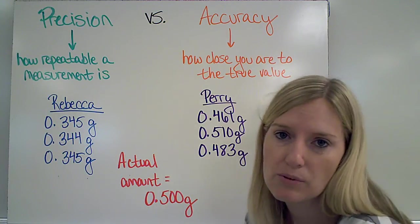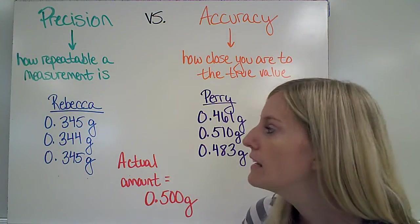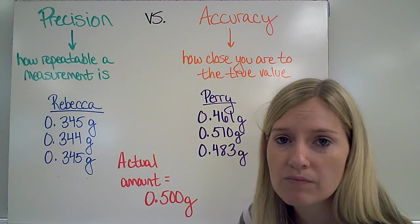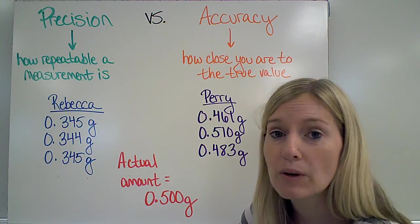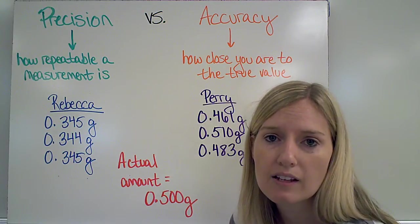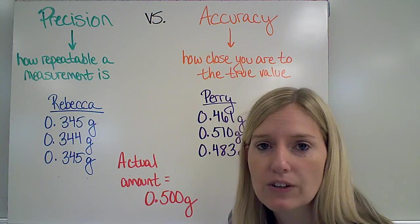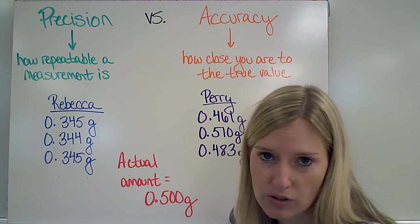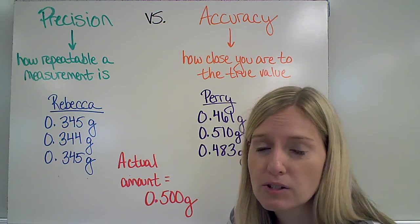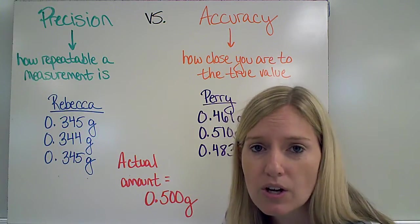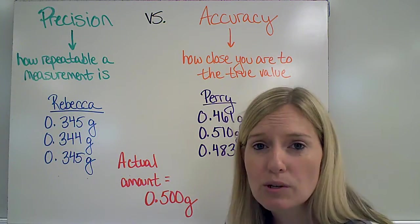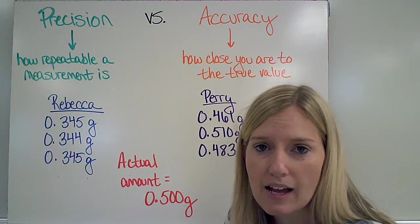One way to look at precision versus accuracy is to look at some results. When I was in college, I did a lab where I was given a solution, and I had to figure out how much of that solution was a specific compound. All of the students did this experiment in triplicate, meaning they did it three times.